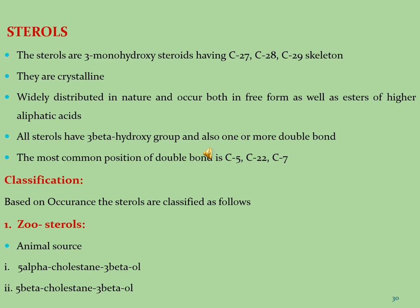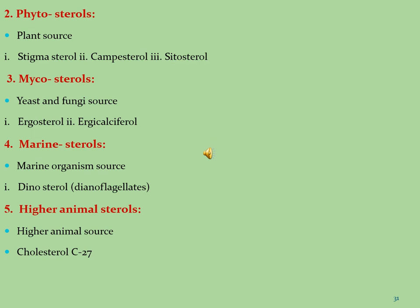Classifications of sterols: Based on occurrence, sterols are classified as follows. Zoosterols are those isolated from animal sources, with common examples being 5α-cholestanol-3β-ol and 5β-cholestane-3β-ol. Phytosterols are isolated and extracted from plant sources, with common examples being stigmasterol, campesterol, and sitosterol. Mycosterols are extracted and isolated from yeast and fungi sources, with common examples being ergosterol and ergocalciferol. Marine sterols are extracted and isolated from marine organisms, with the common example being dinosterol found in dinoflagellates.